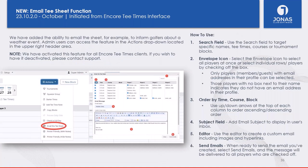Still under Encore Tee Times: we now have the ability to email the tee sheet. If there's a weather delay or frost delay, you can email the players on the tee sheet right from Encore Tee Times. Previously this wasn't available and you had to use another mail engine such as Clubhouse Online email marketing, which required extra steps to export the player list. Now we've streamlined it so you can email the entire tee sheet directly from Encore Tee Times.